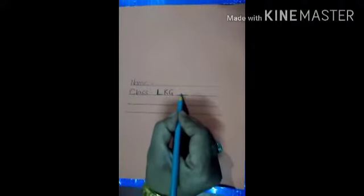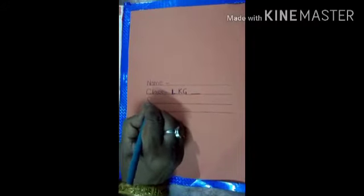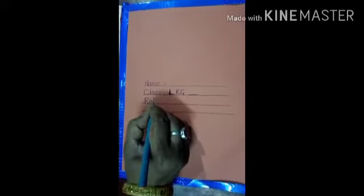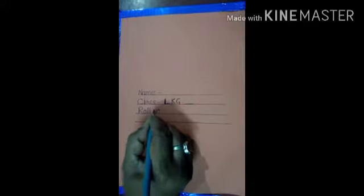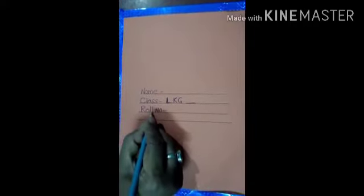Then you write your section here. Now, next line, you will write your roll number. R-O-L-L-N-O dot, Roll number.